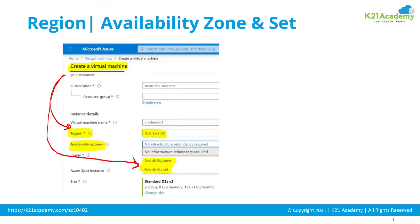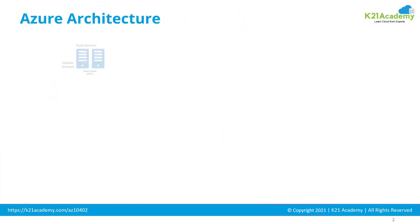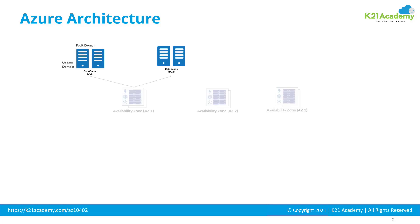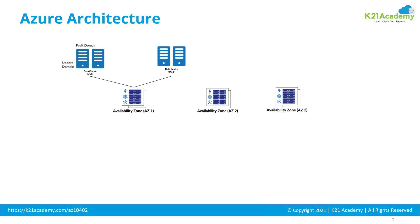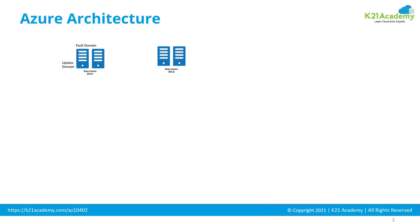Before I explain what availability zone or availability set means, let's first look at the architecture of Microsoft Azure. On a high level, you have a geography. Geography is made from multiple regions, and regions are made from one or more availability zones. An availability zone is nothing but a collection of data centers, and within a data center you have server racks.